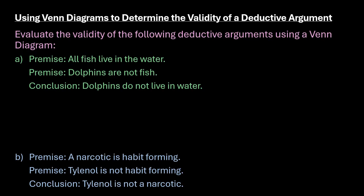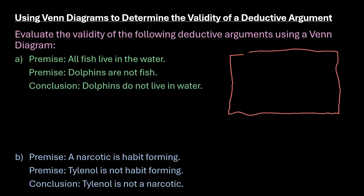So we're looking to see if we can prove conclusively from the premises that our conclusion is valid. We're going to start by drawing a box, since we are using a Venn diagram, to represent the universal set — this is all things that could happen in any situation.